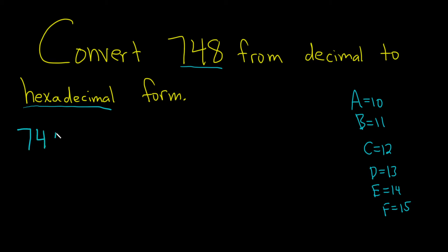We'll start by taking 748 and dividing by 16. So 748 divided by 16, if I put this in my calculator, I get 46.75. To figure out the remainder, you take this number and multiply it by 16. 0.75 times 16 - I got 12. So 12 in hex form is equal to C. So our remainder is C. Pretty cool stuff.